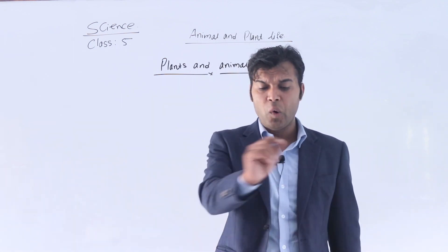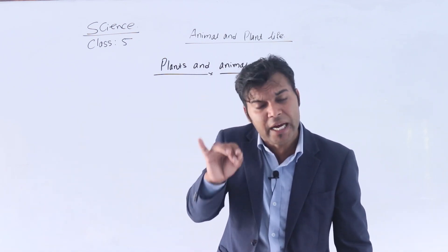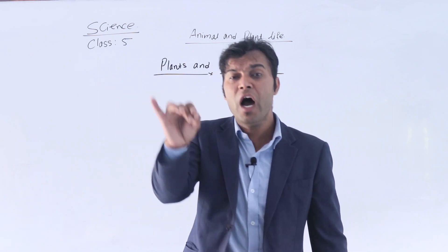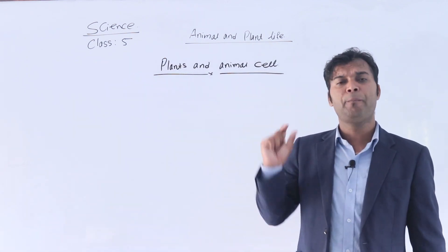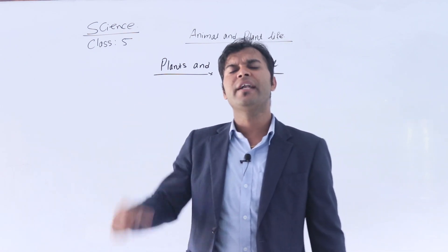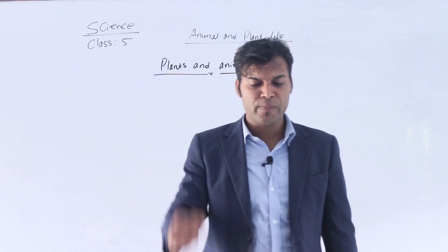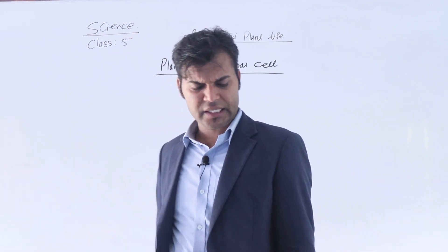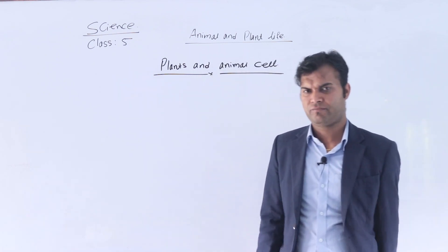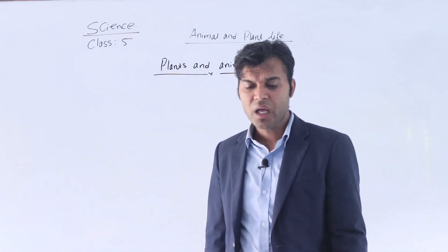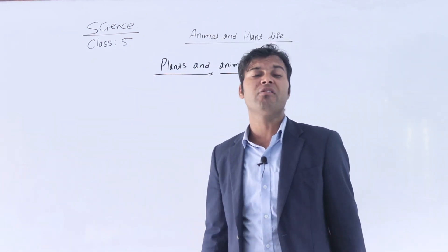Next is the vacuole. The vacuole is filled with fluid. Both animal cells and plant cells contain vacuoles, which are filled with liquid. And the last part is the chloroplast — this is a part of the plant cell which contains a green-colored substance called chlorophyll. The chloroplast, which contains chlorophyll, is found in plant cells.